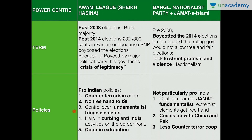The Awami League's pro-India policies include counterterrorism cooperation, helping curb extremist militant activity, not giving ISI a free hand — as opposed to the Bangladesh Nationalist Party — and maintaining control over fringe elements, which goes unchecked when BNP and Jamaat-e-Islami come to power. It also helps curb anti-Indian activities and cooperates in extradition and mutual legal assistance treaties. That is why India has a progressive relationship with the Awami League, while under BNP, Jamaat-e-Islami cozies up with Pakistan and counterterrorism cooperation weakens.